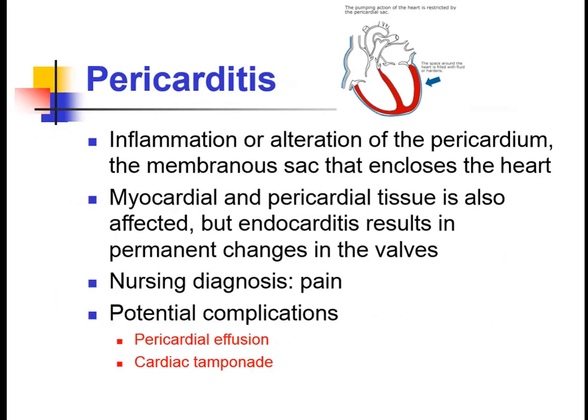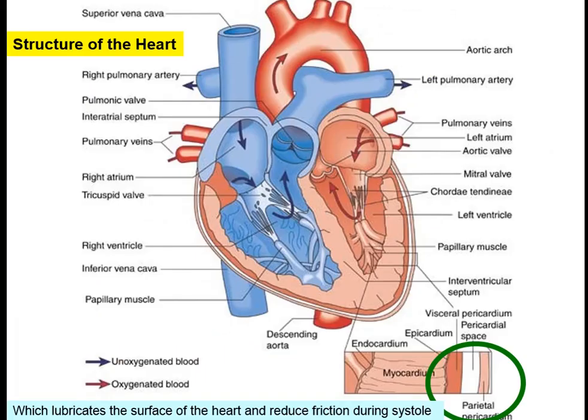Pericarditis is inflammation and alteration of the pericardium, the membrane sac that encloses the heart. The outer layer inflammation is called pericarditis. It can result in permanent changes in the valves similar to endocarditis. Structural changes occur in the outer and inner layers of the pericardium, disturbing normal heart function.